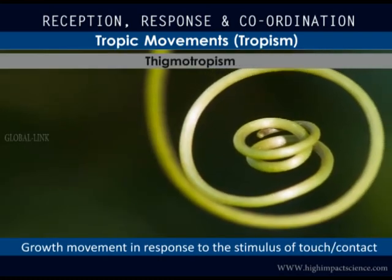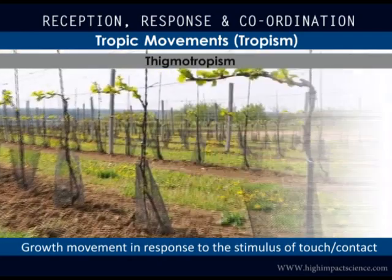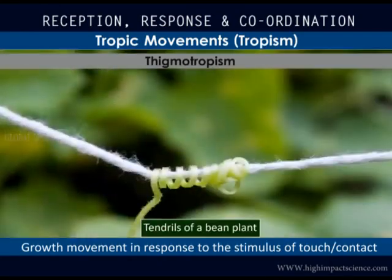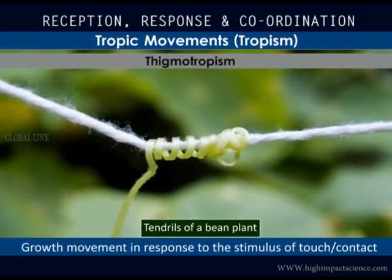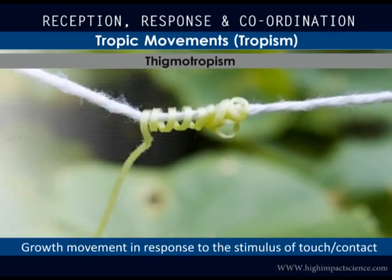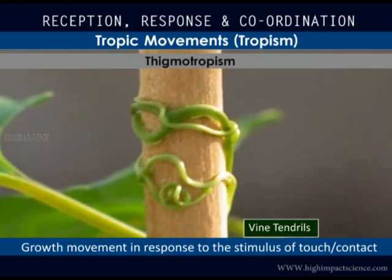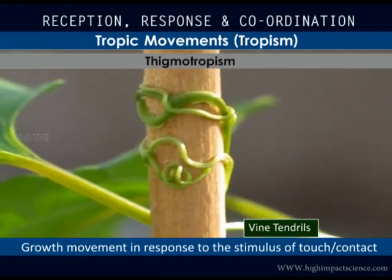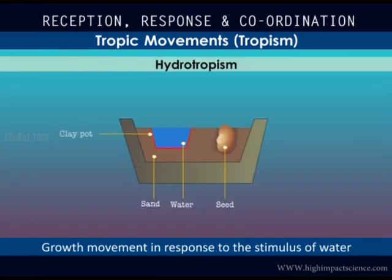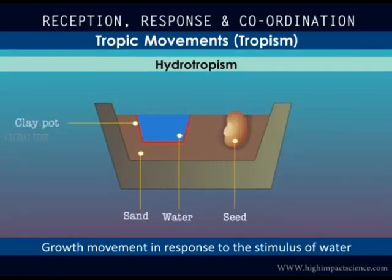This succulent stem is called a tendril. Tendrils grow in the direction of a solid object that they come in contact with. The plant's growth movement in the direction of a solid object that touches it is called thigmotropism. The growth movement of plants in response to the stimulus of water or moisture is called hydrotropism. In this setup, we can see that the bean seed has its roots growing towards water. Water is the stimulus that has led to this directional growth movement of the root.